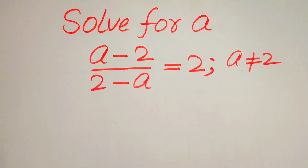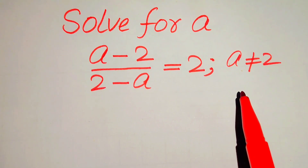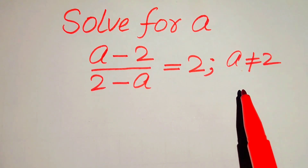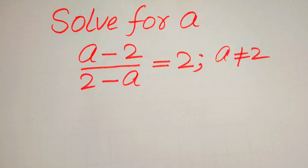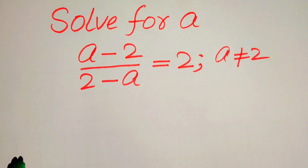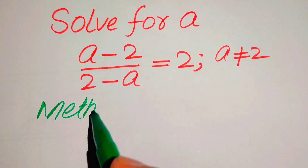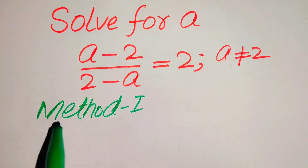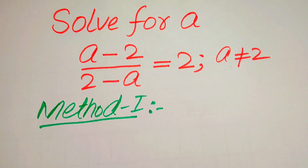So here we have one condition: a is not equals to 2. This means that we solve this problem for other values. Here first we find all the roots of this equation, and at the last we will check which of these roots satisfy the given question statement and which are extraneous roots. Further we solve this problem using two methods.